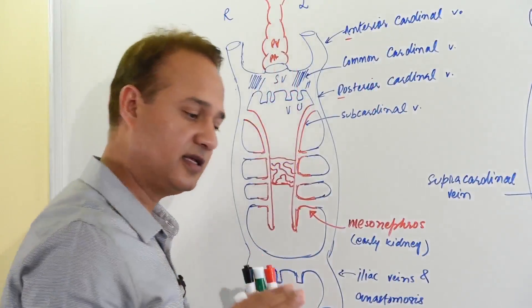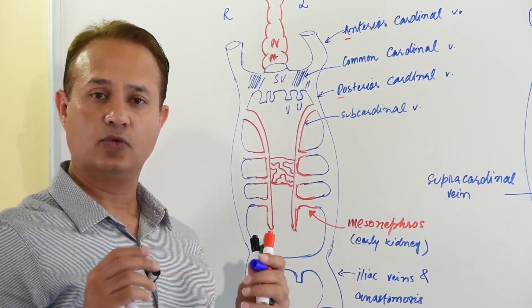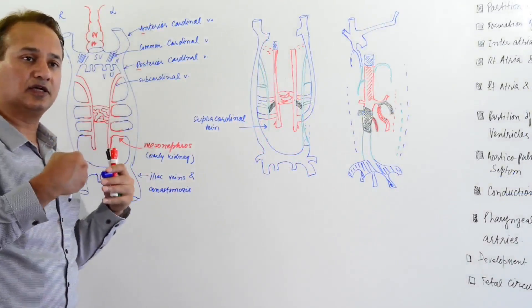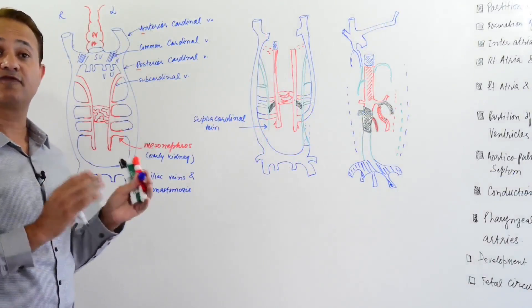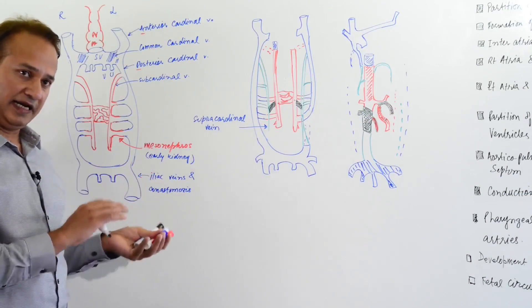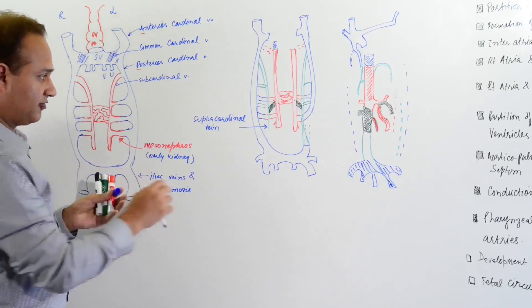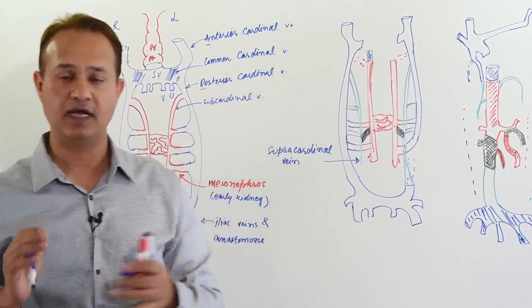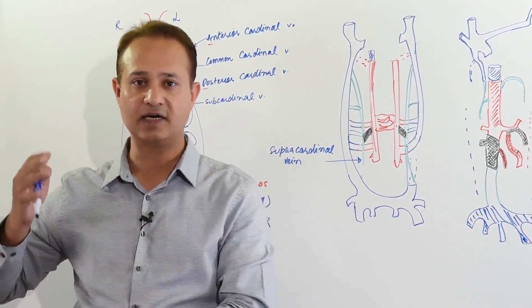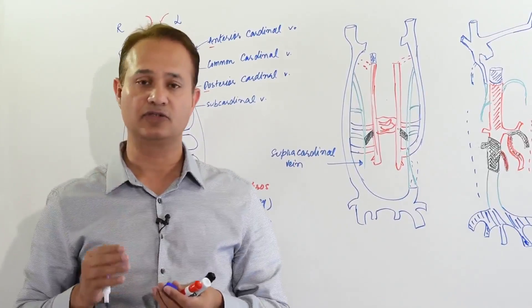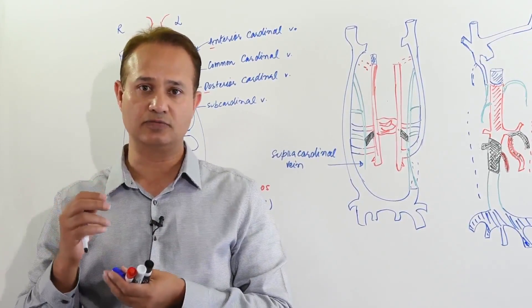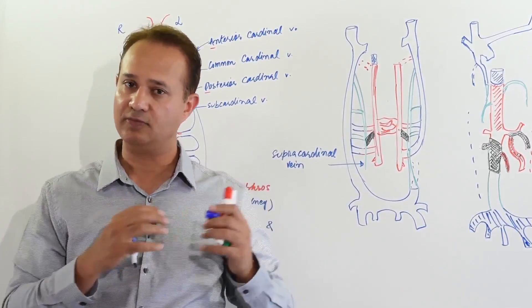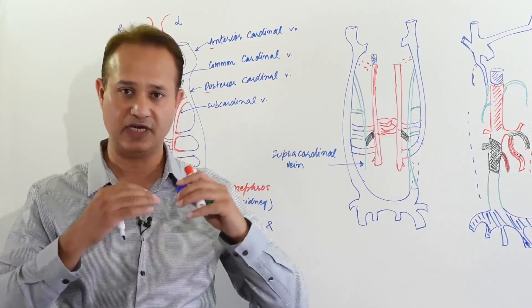What happens in the embryo is that blood returning to the heart starts shifting towards the right from the left. There are shunts and anastomoses that develop, moving blood from the left side towards the right side. Due to that, blood vessels on the right side start becoming more mature and bigger. This happens with the sinus venosus as well — the right side grows and becomes part of the right ventricle.